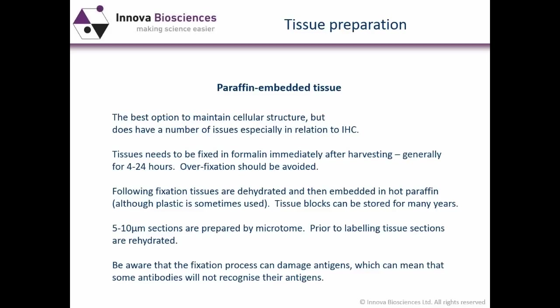As well as using them for immunohistology and standard histology, you can also extract DNA and undertake molecular studies with these tissues. When you come to use the tissue blocks, you prepare 5 to 10 micrometer sections by microtome. Just prior to labeling, you rehydrate the tissue sections, dissolving the paraffin wax in xylene and bringing them back to an aqueous environment. Be aware that the fixation process can damage the antigens present, meaning some antibodies will not recognize their antigens after formalin fixation and processing.